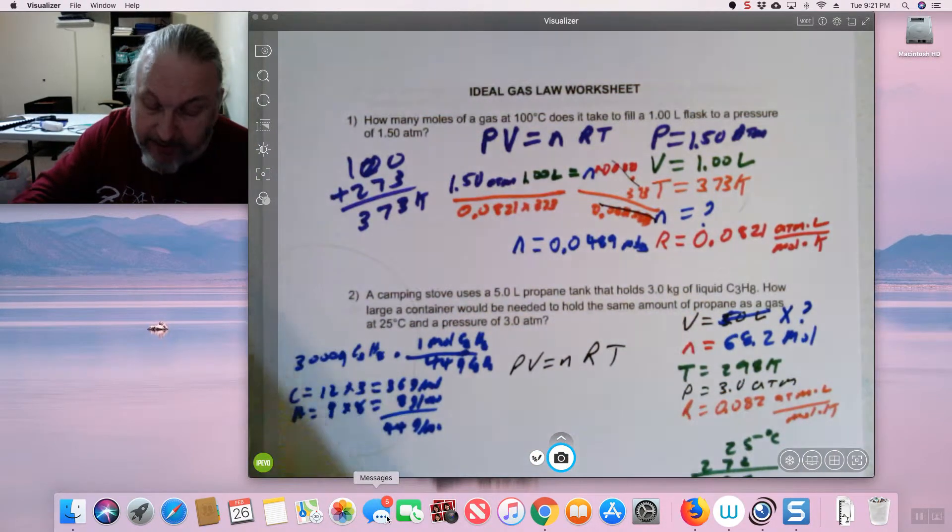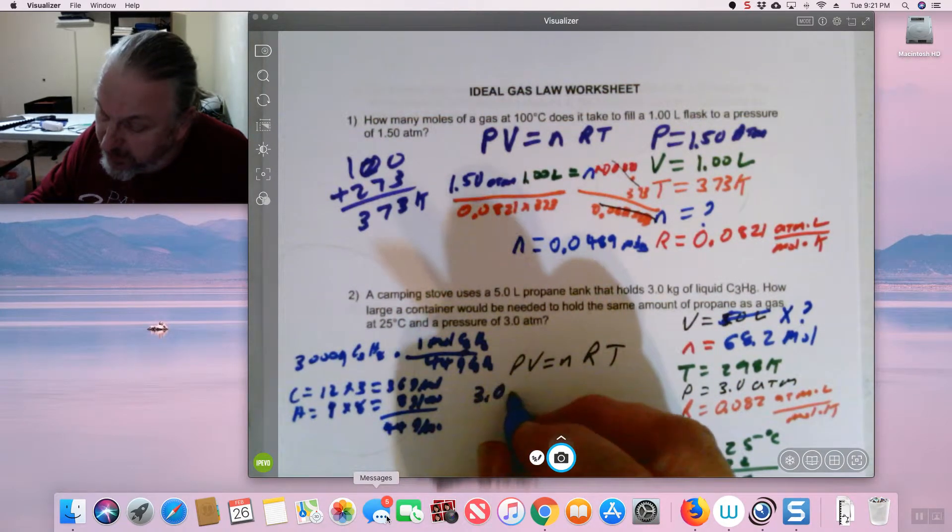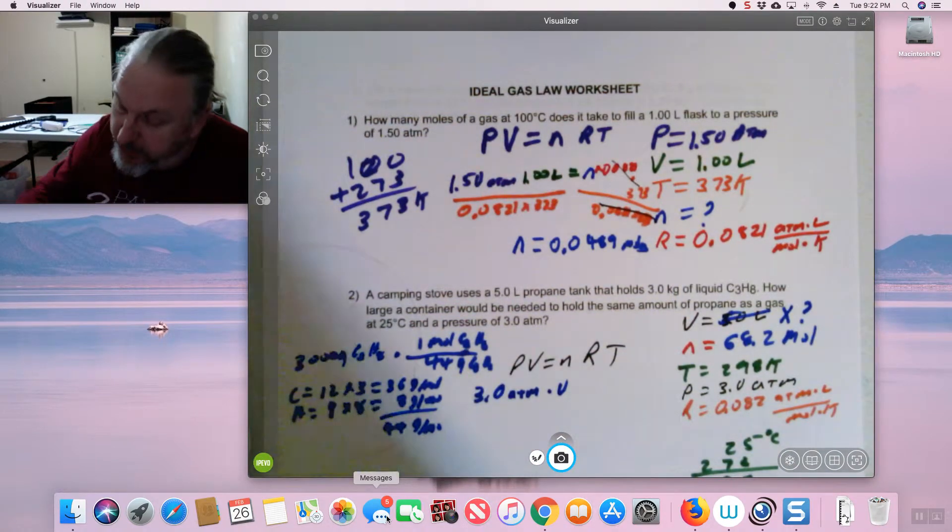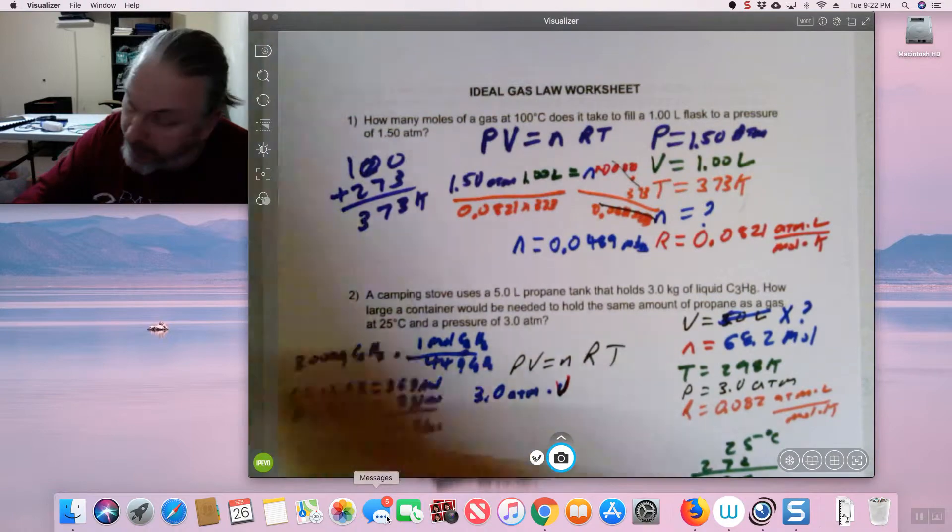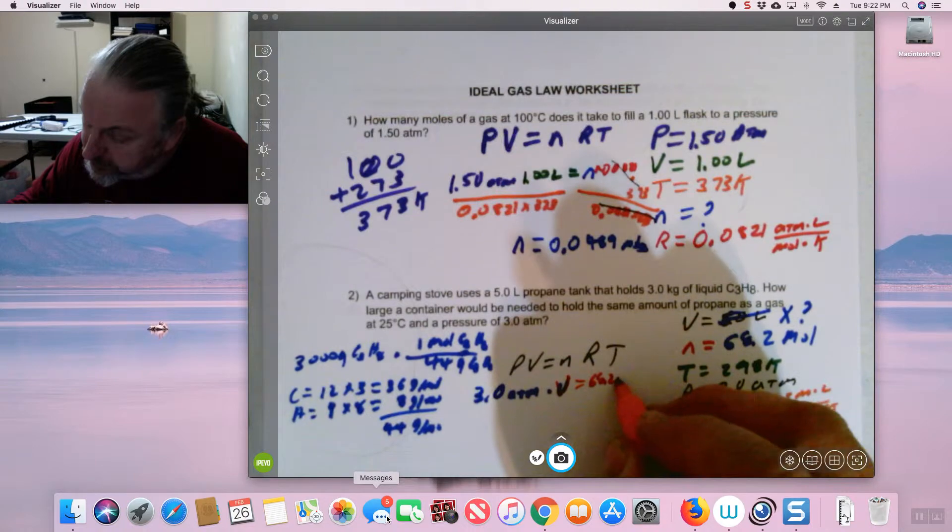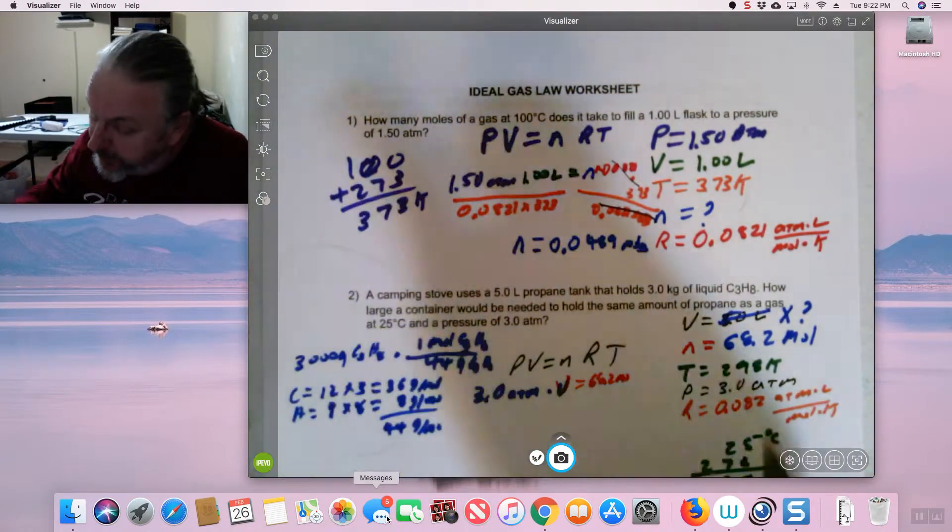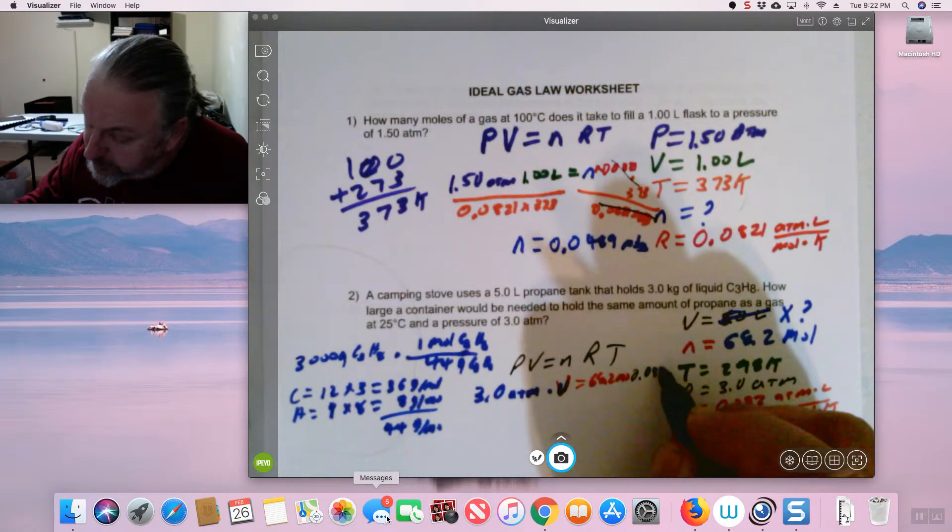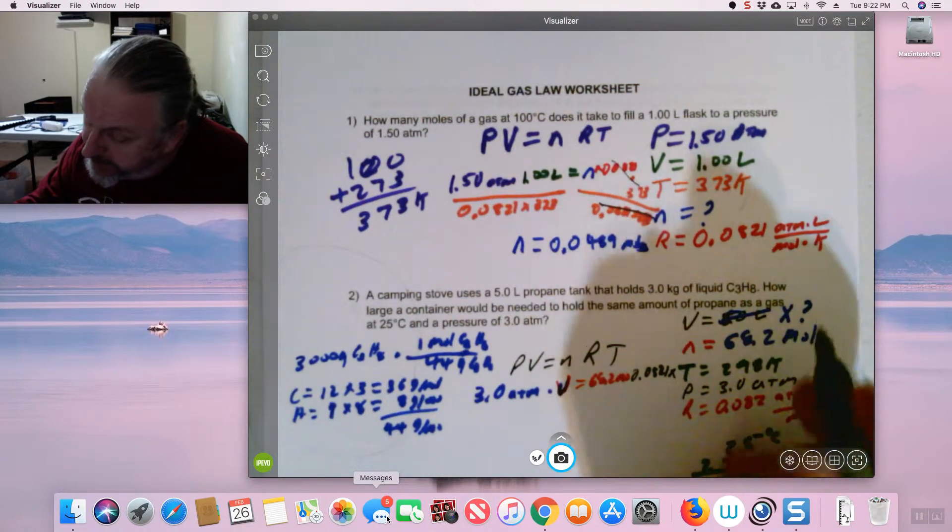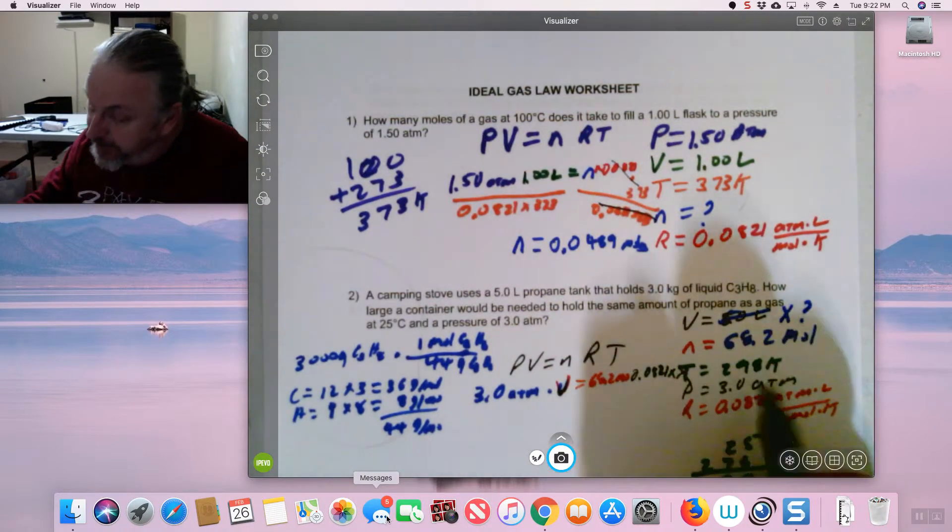Let's put our formula out. PV equal nRT. Now, I'm going to plug the stuff in. Pressure, 3 atmospheres. Volume, I don't know. My number of moles, 68.2. We'll write 0.0821 times temperature, 298K.